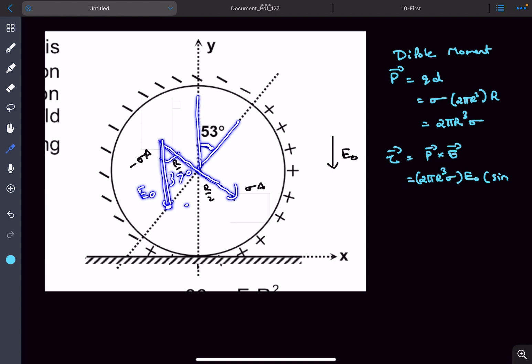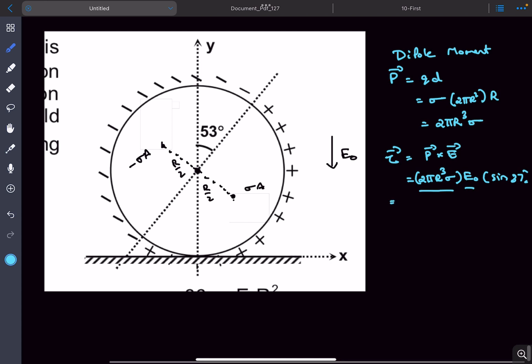The magnitude of the torque is the dipole moment times the electric field times sin(37°). Doing the calculations gives 6/5 πR³σE₀.